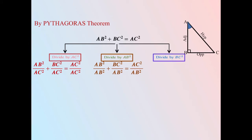On dividing the equation by AB² we have AB² / AB², which is 1, plus BC² / AB² = AC² / AB². And lastly, dividing by BC² we have AB² / BC² + BC² / BC², which is 1, equals AC² / BC².